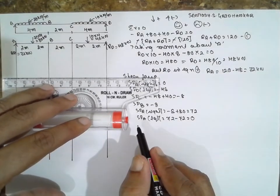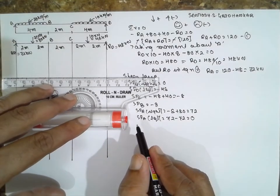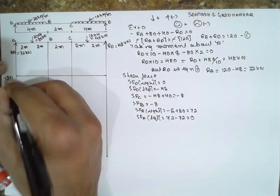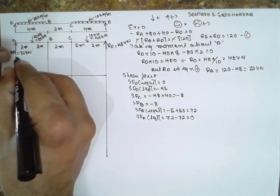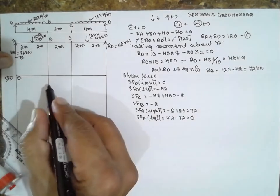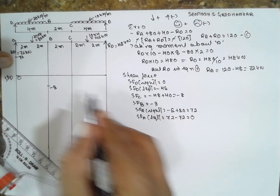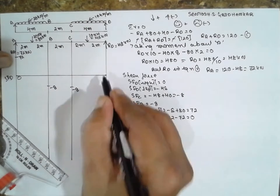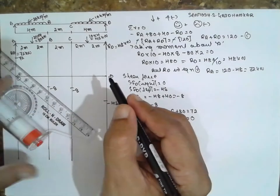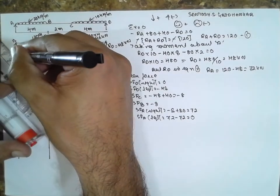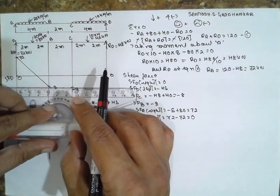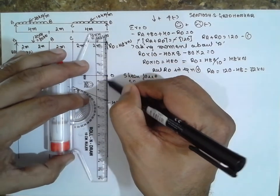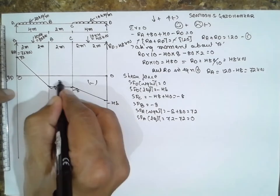Draw the shear force diagram. Above is positive, below is negative. SFD: first is 0, next is 72, next is minus 8 at B, at C minus 8, at D minus 48, and 0. Draw the lines because it is a UDL, there is an incline appears. This completes your shear force diagram.